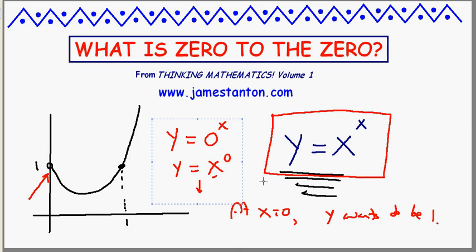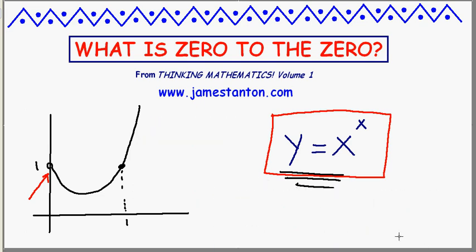But there's a nice little calculus question here. Look at this graph of y equals x to the x — if you look closely, it does dip down. I'm wondering where this dip is; where's the lowest value of this graph? So for those who know calculus, here's my extra challenge: prove that this lowest point occurs at the value x equals one over e. So even though we don't know how to define zero to the zero from this graph, there's something cool for calculus students nonetheless. Thanks.